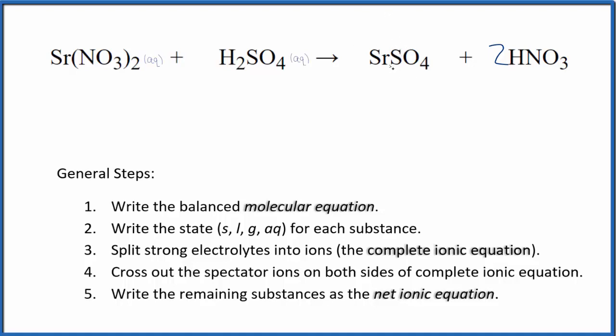One of the exceptions is strontium sulfate. This is insoluble. When these two react, we'll produce this insoluble compound. It'll be a solid and fall to the bottom of the test tube as a precipitate. Then we have nitric acid, another strong acid, so we'll put AQ after that. We have the states for our net ionic equation.